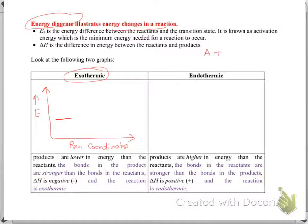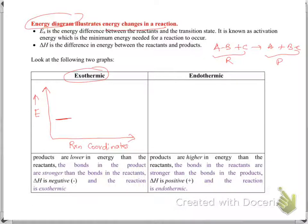Let's discuss the reaction AB + C → A + BC. The bond between A and B is broken, and a new bond is formed between B and C. So my reactants are AB and C, and the products are A and BC. For the exothermic reaction, remember delta H is negative — the products are lower in energy than the reactants. Reactants are written on the left, products on the right, connected by a smooth curve.